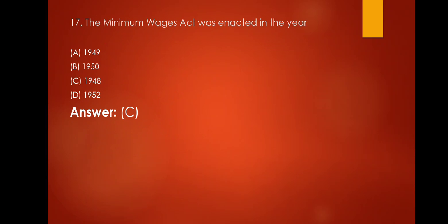The minimum wages act was enacted in the year. Option A: 1949. Option B: 1950. Option C: 1948. Option D: 1952. Here the correct answer is 1948. That is the minimum wages act was enacted in the year 1948.